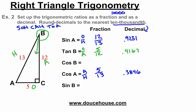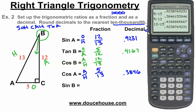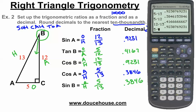Now cosine of angle B: cosine is adjacent over hypotenuse — A over H. The adjacent is 12 and the hypotenuse is 13, so cosine B equals 12 over 13. Plugging into the calculator, 12 divided by 13 gives the same decimal as before: 0.9231, because the digit 7 rounds it up. And then sine of angle B is opposite over hypotenuse: opposite is 5, hypotenuse is 13, so sine B equals 5 over 13. That gives the same decimal as cosine A: 0.3846.